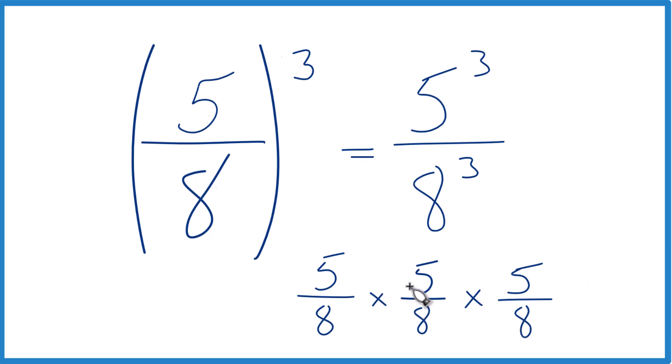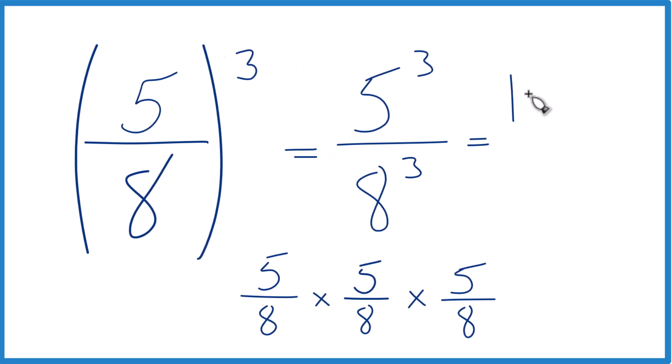So let's just do the math. Five times five is 25 times five, that equals 125. For our denominator, eight times eight is 64, and eight times 64, that equals 512.